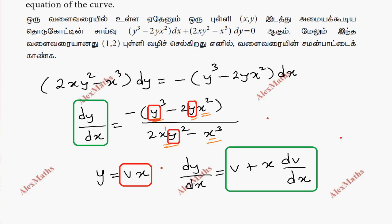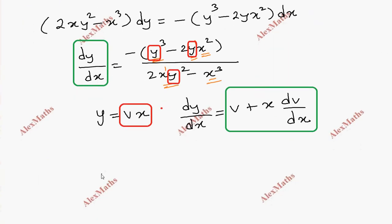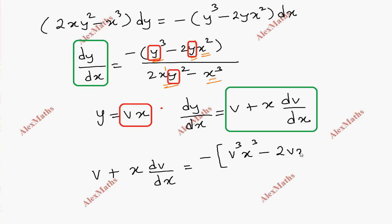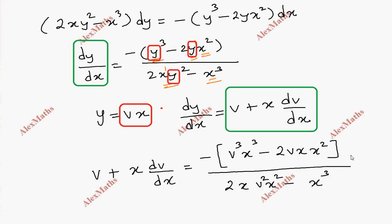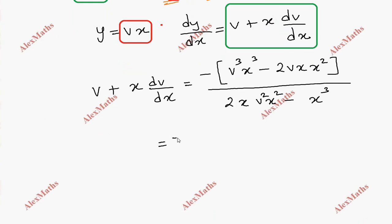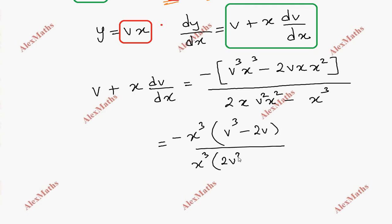So we substitute y = vx. Then dy/dx = v + x·dv/dx, equal to minus: bracket open y³ is v³x³, minus 2vx·x² bracket close, divided by 2x·y² which is v²x², minus x³. In the numerator, x³ is common, giving v³ minus 2v. In the denominator x³ giving 2v² minus 1. x³ cancels. So we get v + x·dv/dx = minus(v³ minus 2v) / (2v² minus 1), which simplifies to −v minus v.